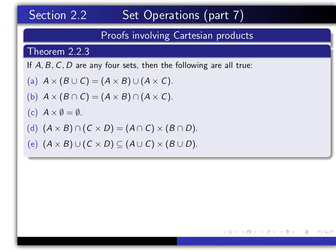Now we're only going to consider this one as the model of a proof, but you should, as an exercise, do the remaining ones. Notice that Part A is a theorem about equality of two sets, and so the way you prove it is you prove that the left-hand side is a subset of the right-hand side, and then you prove that the right-hand side is a subset of the left-hand side. So your proof will involve at least two paragraphs.